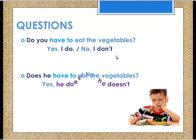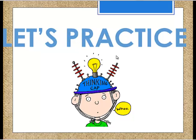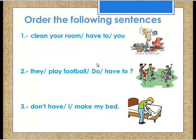Let's practice together. In these exercises, you need to order the following words into sentences. Number one: 'clean your room / have to / you' — the answer is 'You have to clean your room.' Number two: 'they / play football / do / have to' — the answer is 'They have to play football.' Number three: 'don't have / I / make my bed' — the answer is 'I don't have to make my bed.'